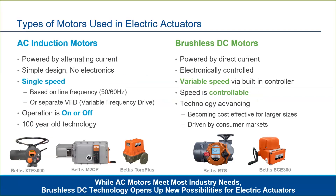AC induction motors are powered by alternating current. They operate at one fixed speed based on the frequency of the AC current being provided to them. So the same motor powered by 60 hertz current would operate at a faster speed than if it were powered by 50 hertz. In some cases, speed could be varied with an external variable frequency drive, which serves to vary the current being supplied to the motor.